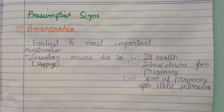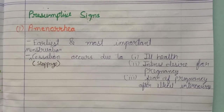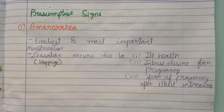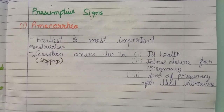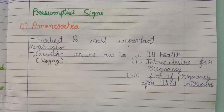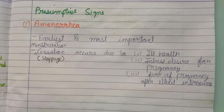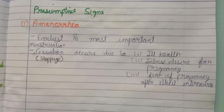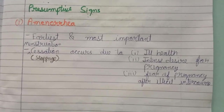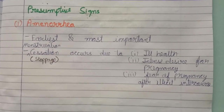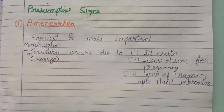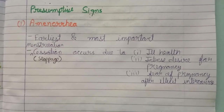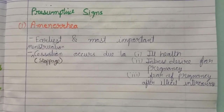The first presumptive sign is amenorrhea, which is the stoppage of the menstrual period. The earliest and most important sign is this stoppage. Cessation occurs due to ill health, intense desire for pregnancy, or fear of pregnancy after illicit intercourse. All these conditions will stop the menstrual cycle and lead the woman to think she is suffering from pregnancy.